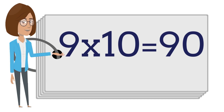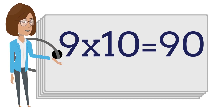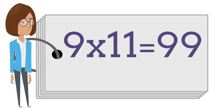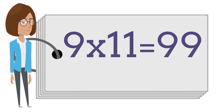Nine times ten is ninety. 9 times 11 is 99.